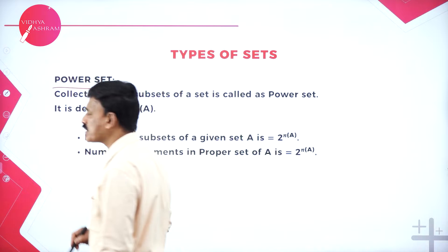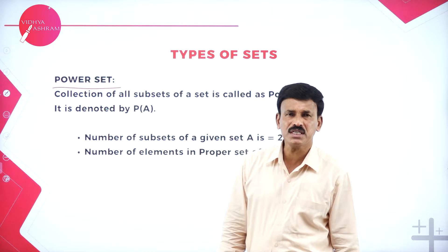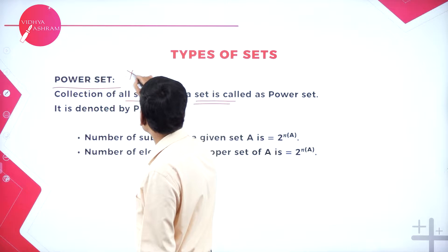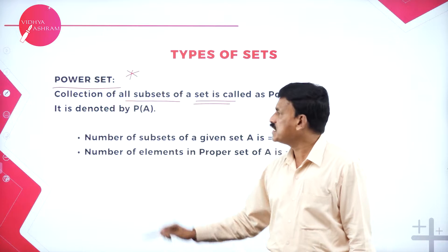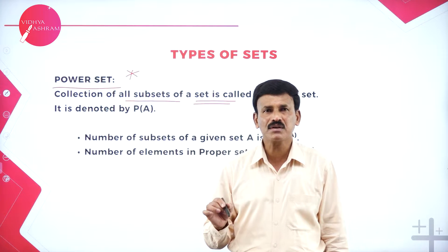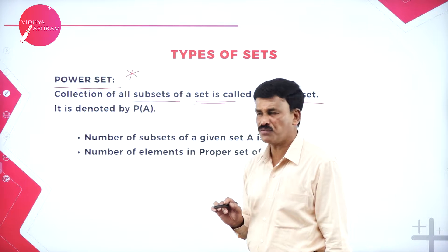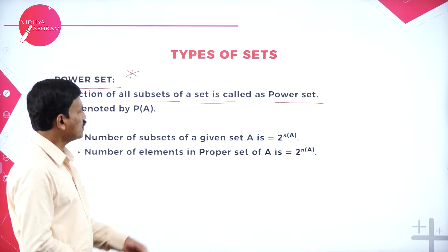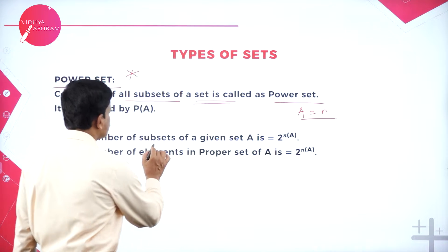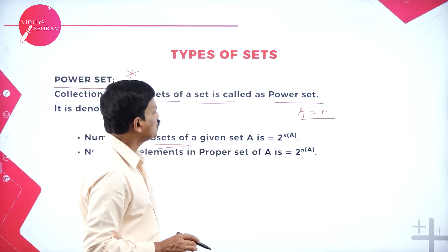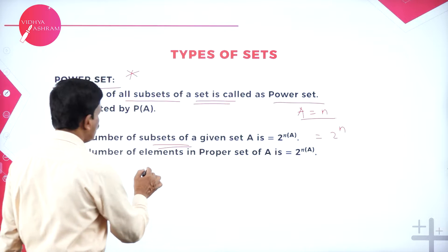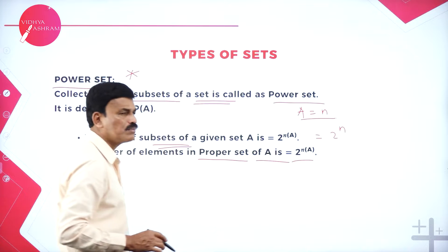Now let us come to the power set. The collection of all subsets of a set is called the power set, denoted as P(A). If a set A contains n number of elements, then the number of subsets of A is 2 to the power of n, i.e., 2^n.